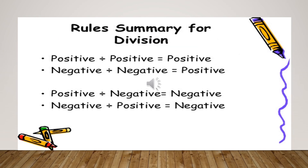Here is a quick summary of the rules for division. If a positive number is divided by a positive number, we get a positive answer. If a negative number is divided by a negative number, we again get a positive answer. If a positive number is divided by a negative number, the answer is negative. And if a negative number is divided by a positive number, the answer is also negative.